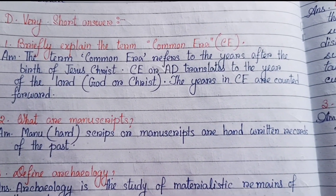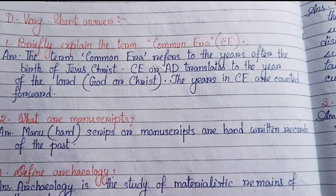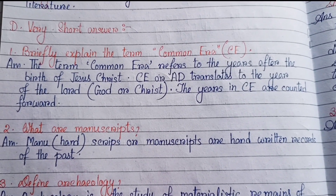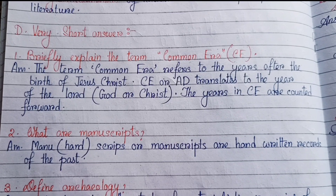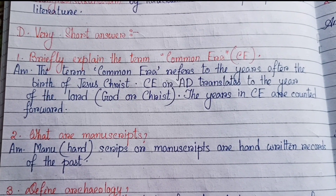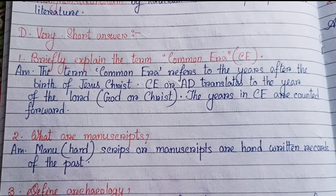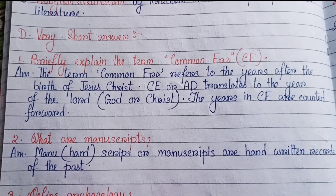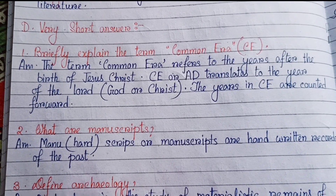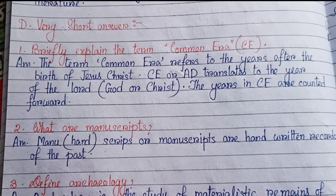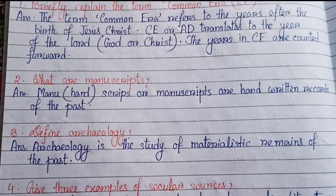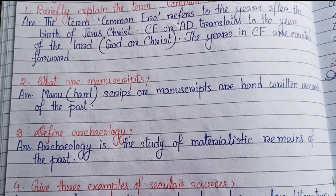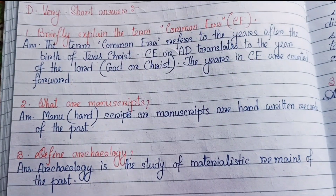Section D: Very short answers. Number one: briefly explain the term Common Era, in short CE. The term Common Era refers to the years after the birth of Jesus Christ. CE or AD translates to 'the year of the Lord God or Christ.' The years in CE are counted forward.